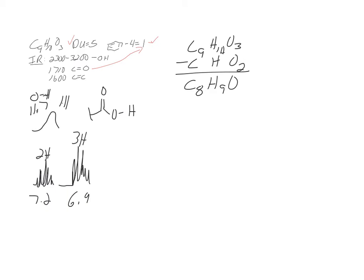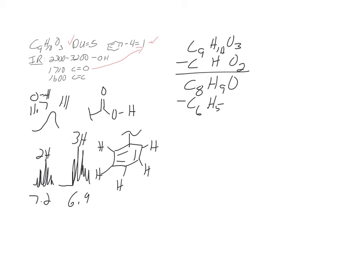Two plus three is five aromatic protons total. So what kind of benzene ring do we have? Monosubstituted — substituted once. That means only one of the six H's has been replaced. This tells us we have a monosubstituted benzene ring. Subtracting C6H5 leaves C2H4O.